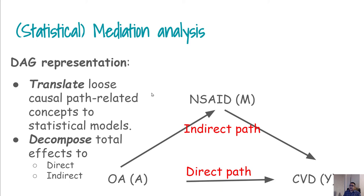We can try to do further analysis of how much effect goes through the painkiller or mediator variable M here, or how much effect of osteoarthritis goes directly to the cardiovascular disease. To divide this direct and indirect path, this directed acyclic graph representation is actually very helpful.